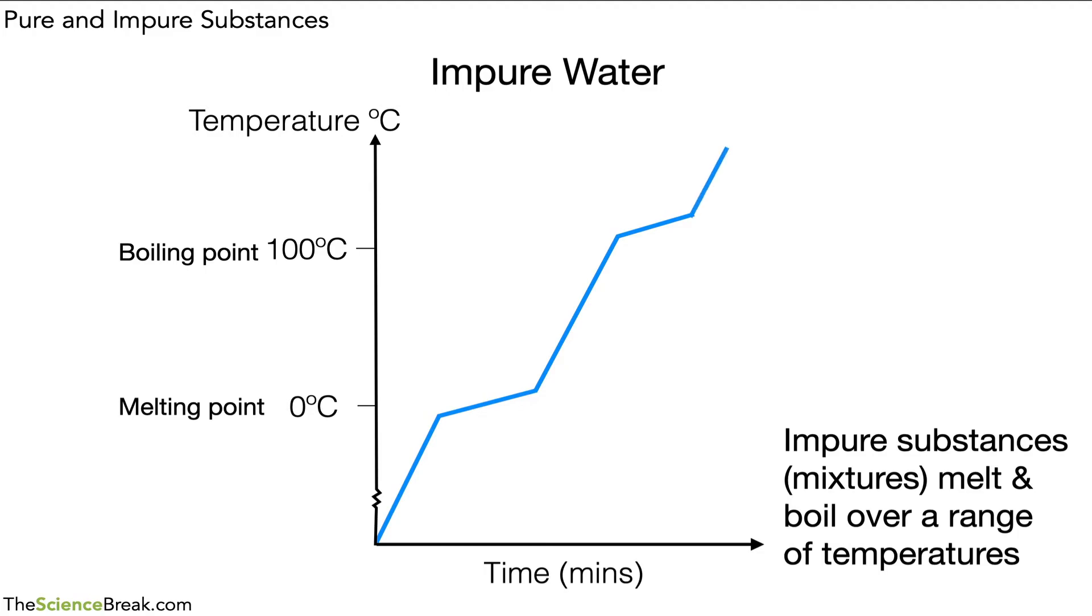We'll be able to see that the melting point actually happens over a range of temperatures, a little bit below zero and a little bit above zero, and the boiling point also has a range of temperatures as well. The boiling point actually gets a bit higher than a hundred degrees and goes on for a little bit more, but the graph is not flat. We have melting and boiling over a range of temperatures.